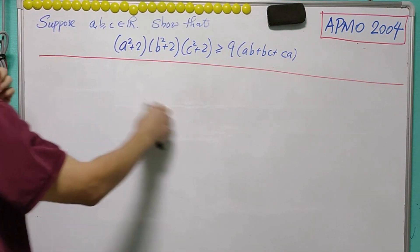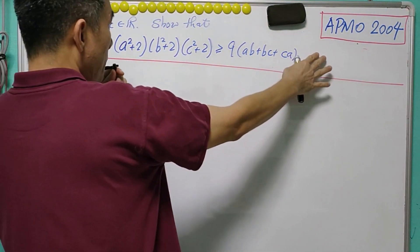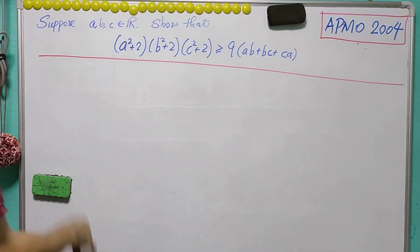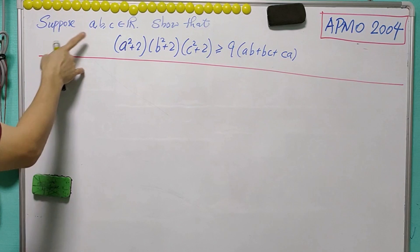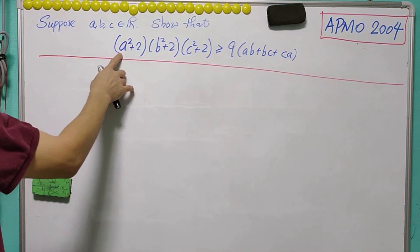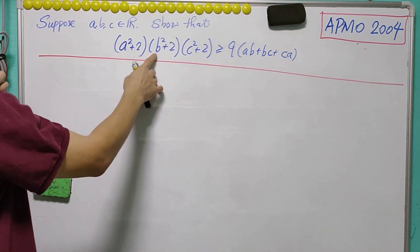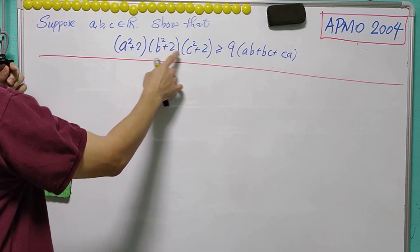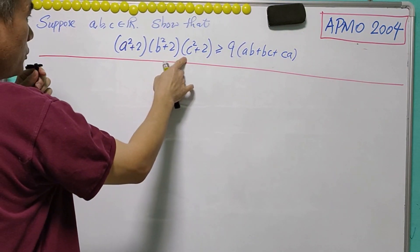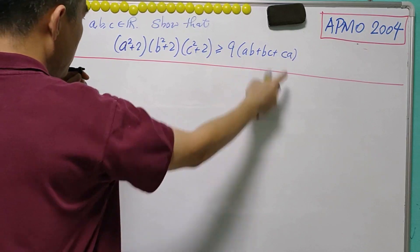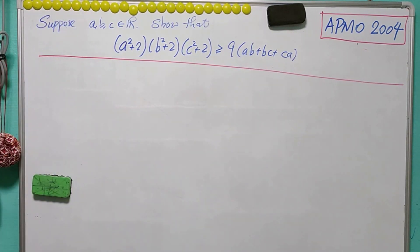This inequality question comes from APMO 2004. Suppose A, B, C are real numbers. We are to show that (A²+2)(B²+2)(C²+2) is greater than or equal to 9(AB+BC+CA).